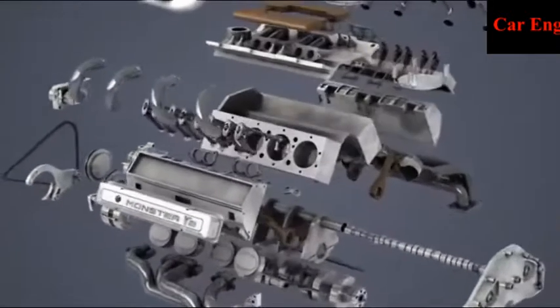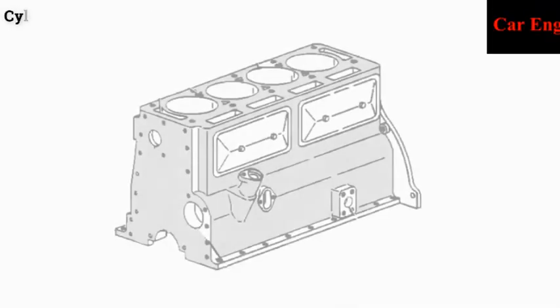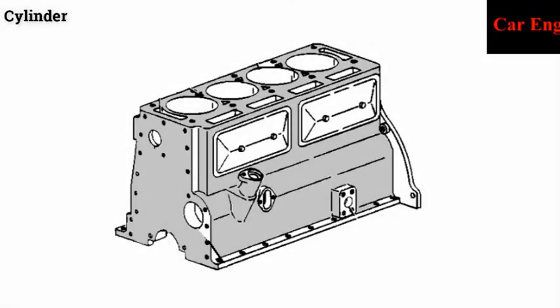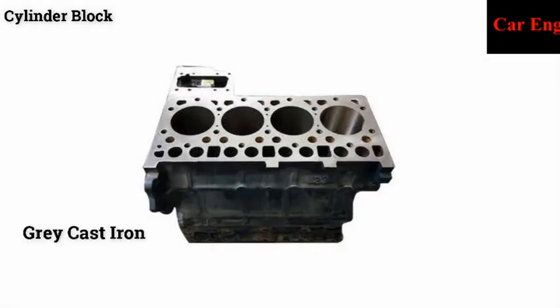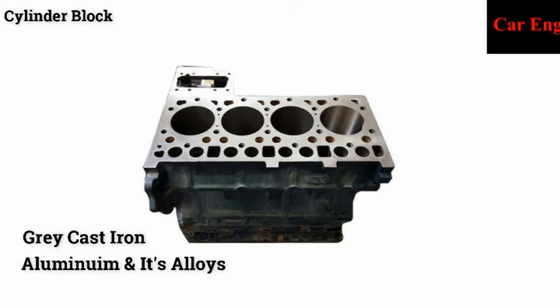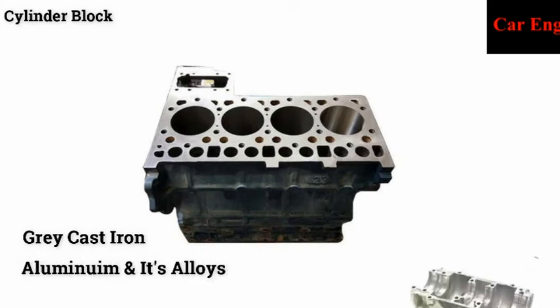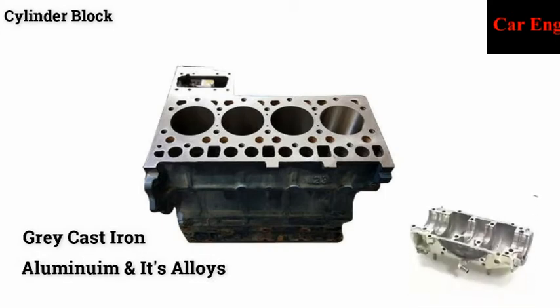Now let's take a look at each engine part with details, starting with the cylinder block. It is the basic framework for the engine and one of the main parts of an engine. A cylinder block consists of three parts. The cylinder block is usually made of grey cast iron or aluminum and its alloys, while the crankcase is fixed to its bottom.